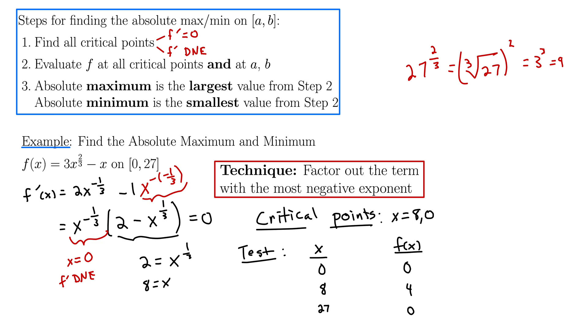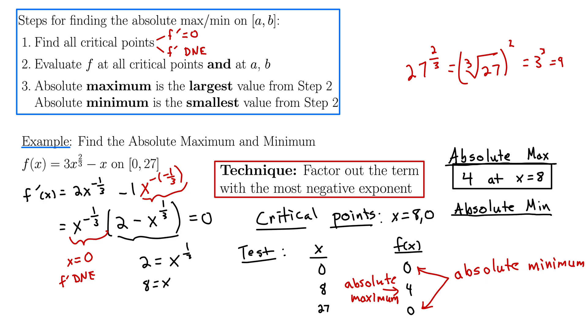Finally, we want to determine what's our absolute maximum and minimum. So for this, we only use the y values. So we're looking at a y value of zero that occurs at both zero and 27. So that is our absolute minimum. And then four is our absolute maximum. Then for our final answer, we essentially just say what the maximum and minimum are and where they occur. So we'd say that the absolute maximum is four at x equals eight. And then we'd say that the absolute minimum is zero at x equals zero and 27.